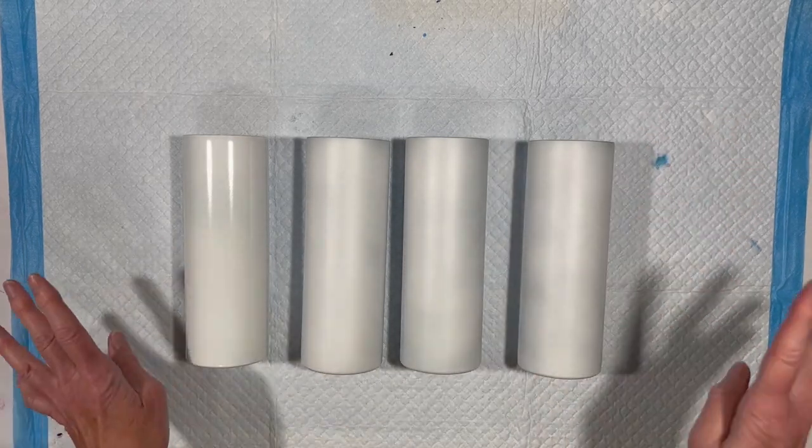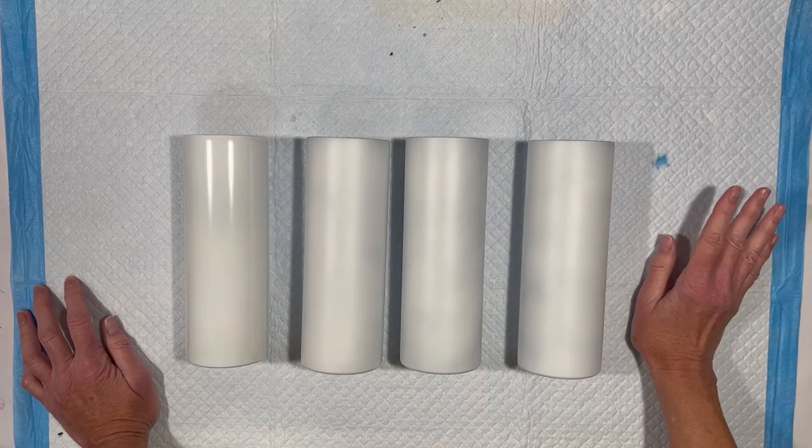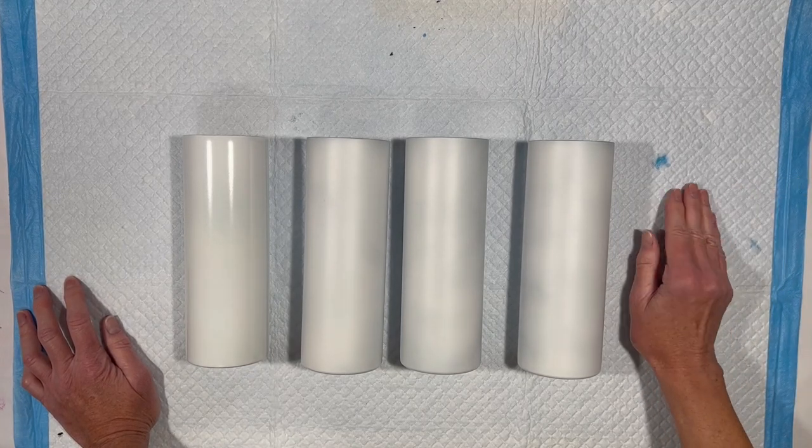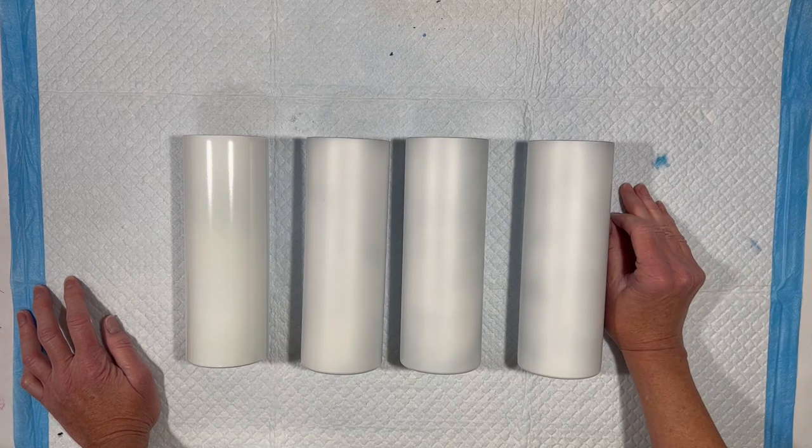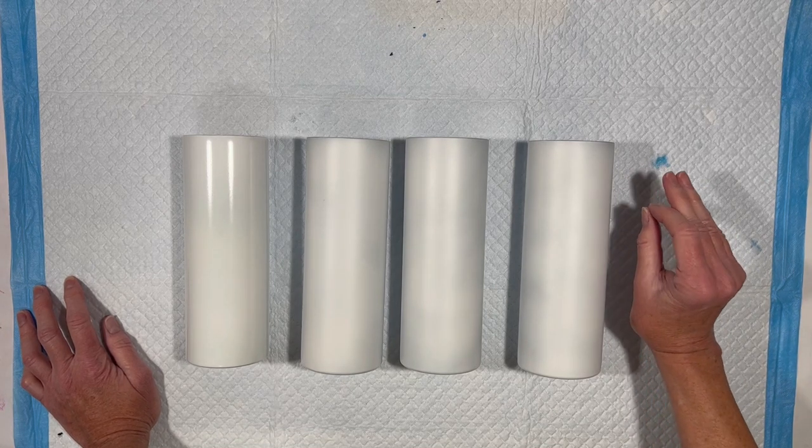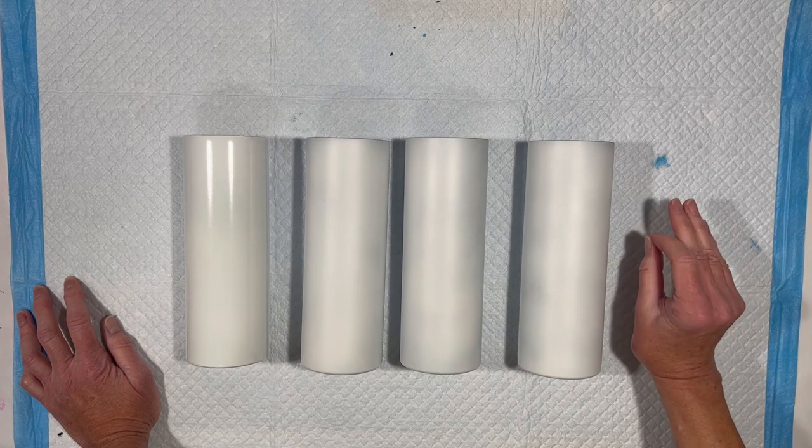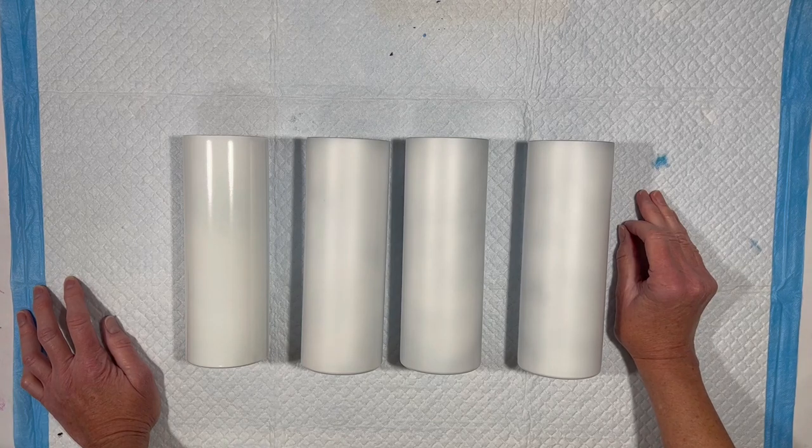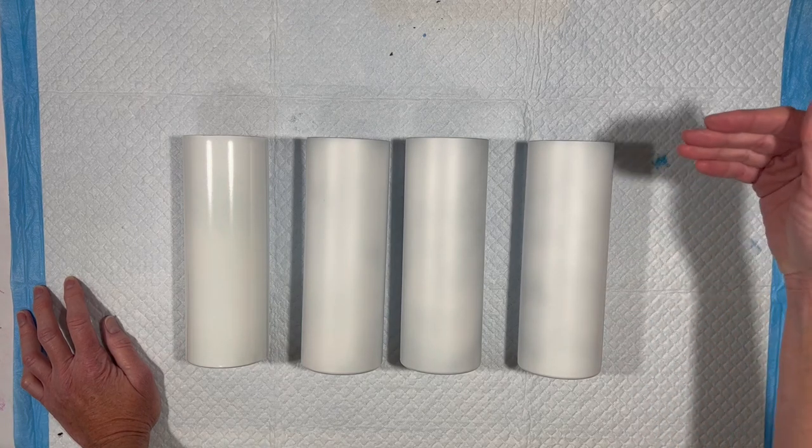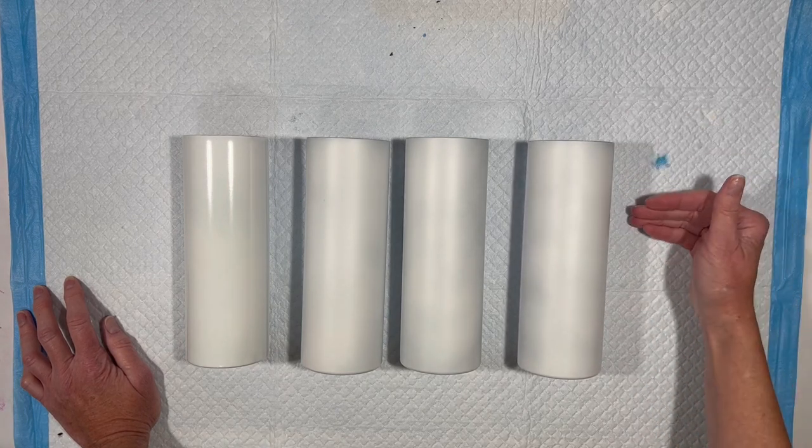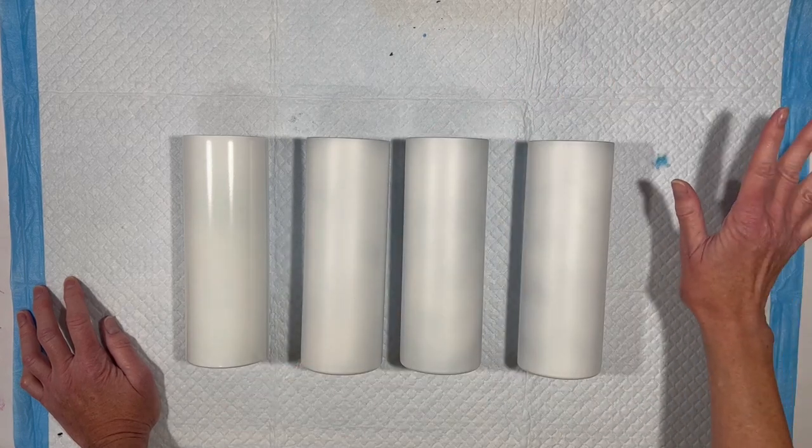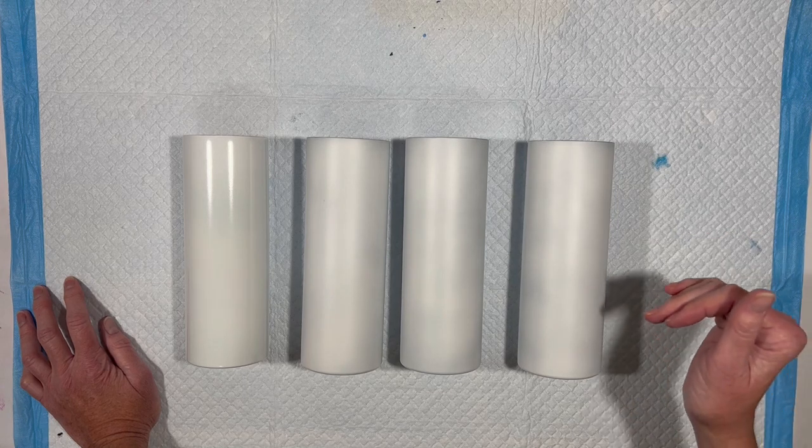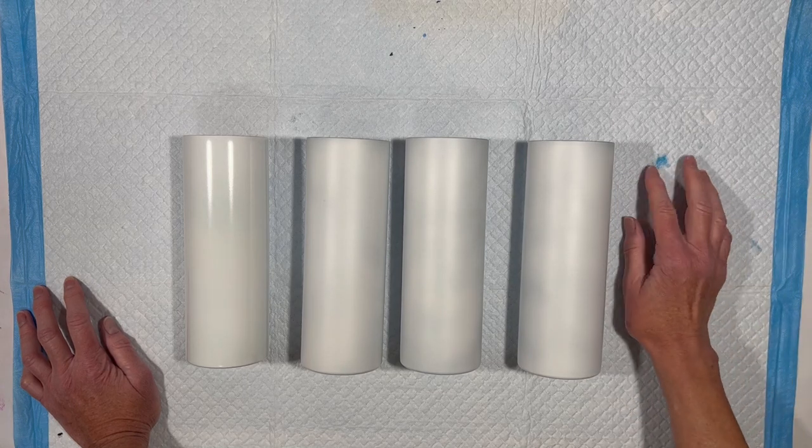So here are the four cups and I'm not saying these are the only four ways to achieve a glow-in-the-dark tumbler. I'm sure there are lots of other ways. I just figured these might be the four easiest ways or the four ways that people would have the materials to do. I will list all of the materials I use in this video down in the description area below.